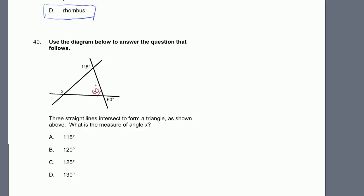This angle is 115 degrees. It is supplementary to the adjacent angle, meaning that angle plus 115 equals 180. So that angle equals 65 degrees. Now inside the triangle, we have angles of 60 degrees and 65 degrees, and an unknown angle y.